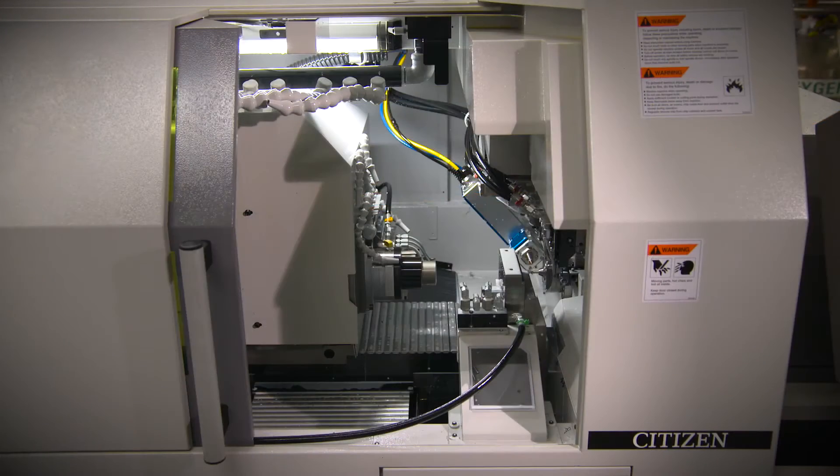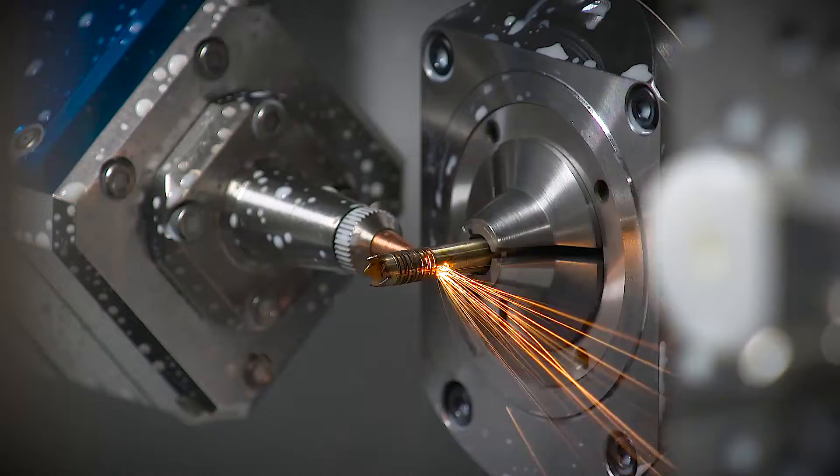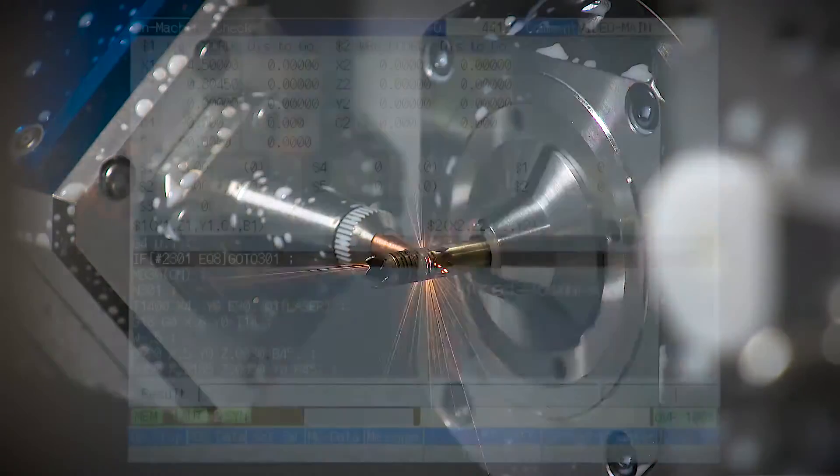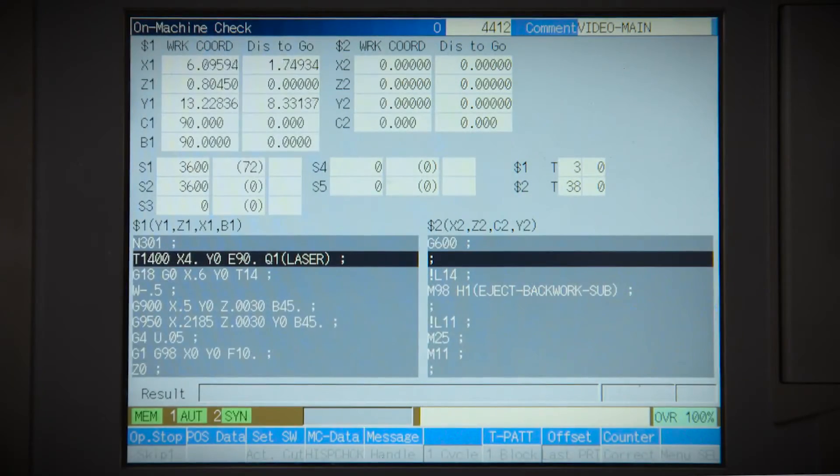The laser head assembly mounts on the gang tool slide of the Syncom machine. The movements are programmed in the part program of the machine control.